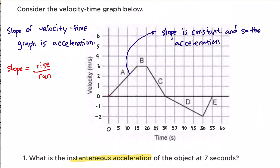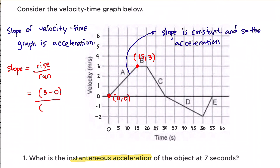Let's choose the point at coordinates (0, 0) and the point at coordinates (15, 3). Rise over run means change in y over change in x, so y2 minus y1 over x2 minus x1. That gives us 3 minus 0 divided by 15 minus 0, which is 3 divided by 15. The slope is equal to 0.2, and since we have a velocity-time graph, the slope is the acceleration.